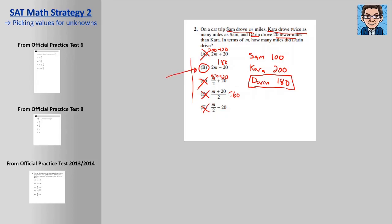So our answer is B. And like I said, even if you set up the equation and you just weren't too sure, you could put in the numbers and double-check as well. So that's how we use picking values for unknowns to help us either double-check, or solve quicker, or solve something that we didn't know how to solve.